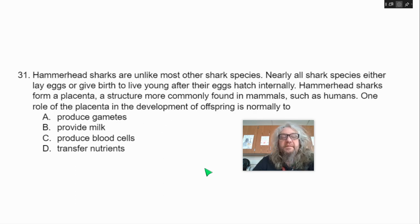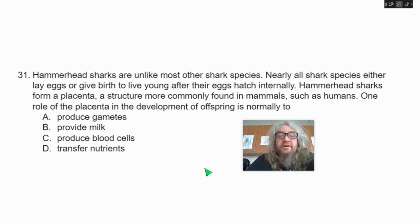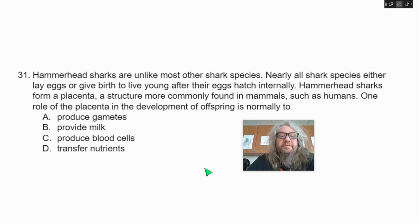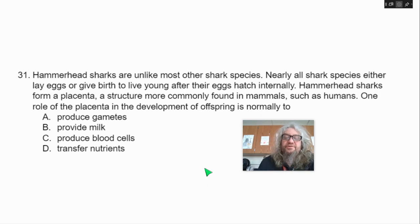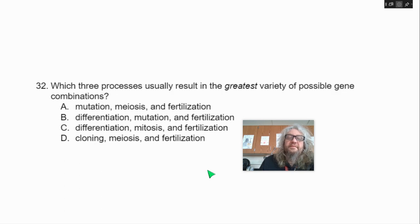Number 31. Hammerhead sharks are unlike most other shark species. Nearly all shark species either lay eggs or give birth to live young after their eggs hatch internally. Hammerhead sharks form a placenta, a structure more commonly found in mammals such as humans. One role of the placenta in the development of the offspring is normally to — A, produce gametes; B, provide milk; C, produce blood cells; or D, transfer nutrients.